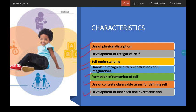Next is development of inner self and overestimation. Children at this time overestimate themselves. Young children also develop an inner self — private thoughts, feelings and desires — from watching television, movies, and listening to stories. For example, children start behaving like their favorite character like Superman, Chota Bheem, or Snow White. They overestimate their capabilities, which is why young children sometimes boast — for example, a child may say 'I remember all the poems' but actually may not remember them completely.